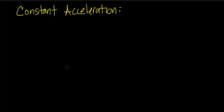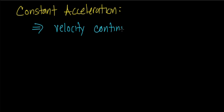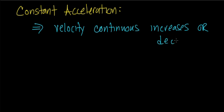In this session we'll talk about what it means for an object to be traveling with constant acceleration. A key idea is that velocity will be continuously either increasing or decreasing. There are three types of graphs we can make: a distance versus time graph, a velocity versus time graph, and an acceleration versus time graph. We're going to look at all three and see what they actually mean.